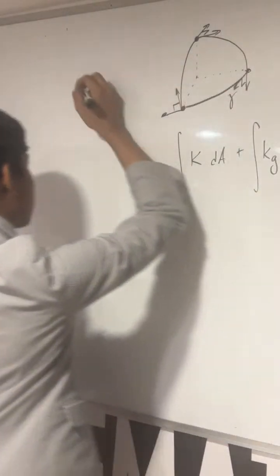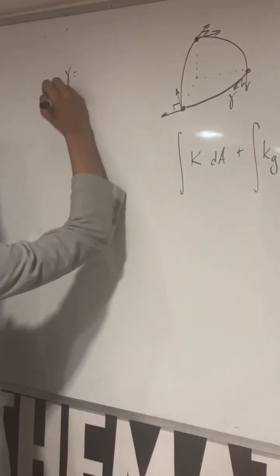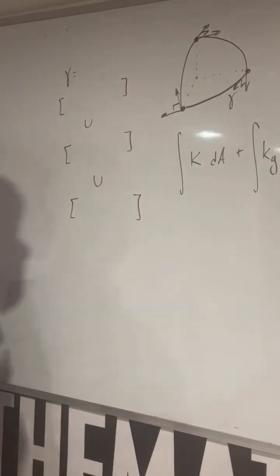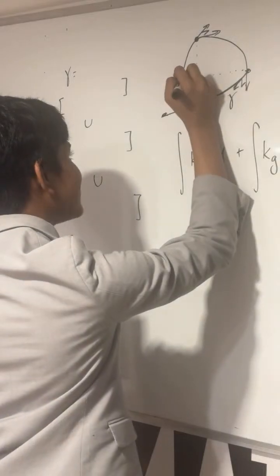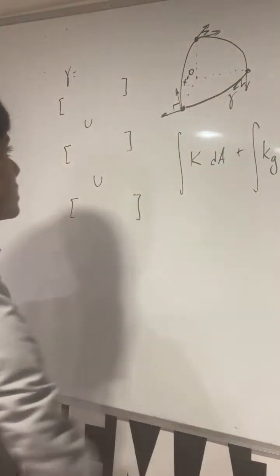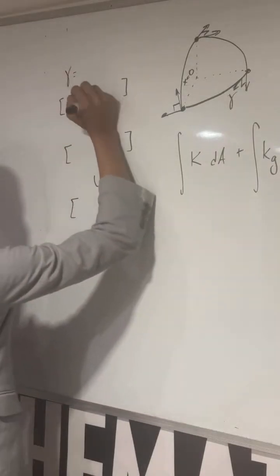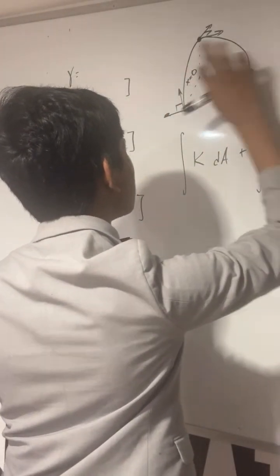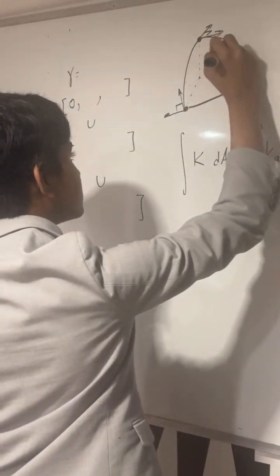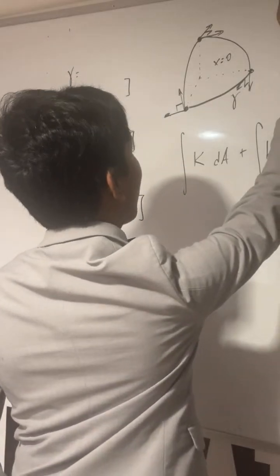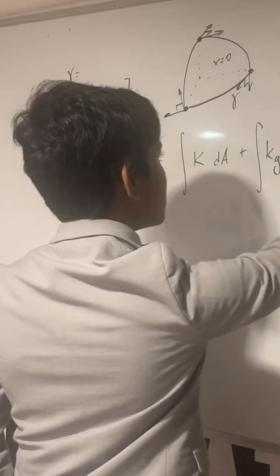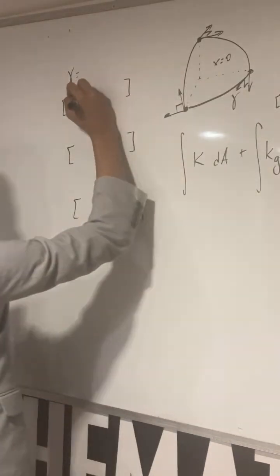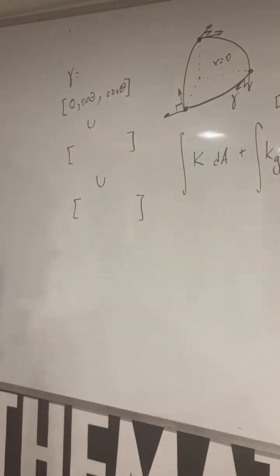So first, let's parametrize this boundary. This can be written as the union of three parametric curves. For the first one, we'll choose the one in the plane x equals zero, which is this one, and that's going to be zero, comma... wait a second, that's y equals zero. This is x equals zero. We'll just have y on this axis and z on this axis, which means that the other two will look something like sine theta cosine theta. Remember, we're talking about the unit sphere, so no radius factor to add.